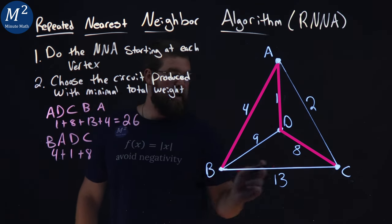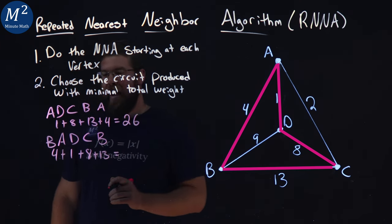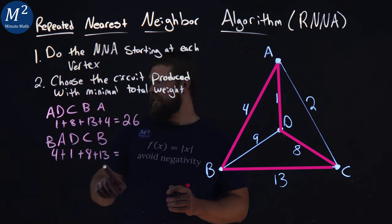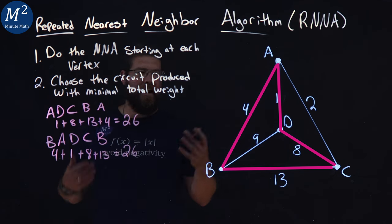And then C brings us back to B, has a weight of 13. And when we add all that up, 4, 1, 8, 13, that's the same as before, that gives us again a 26. All right, not any better.